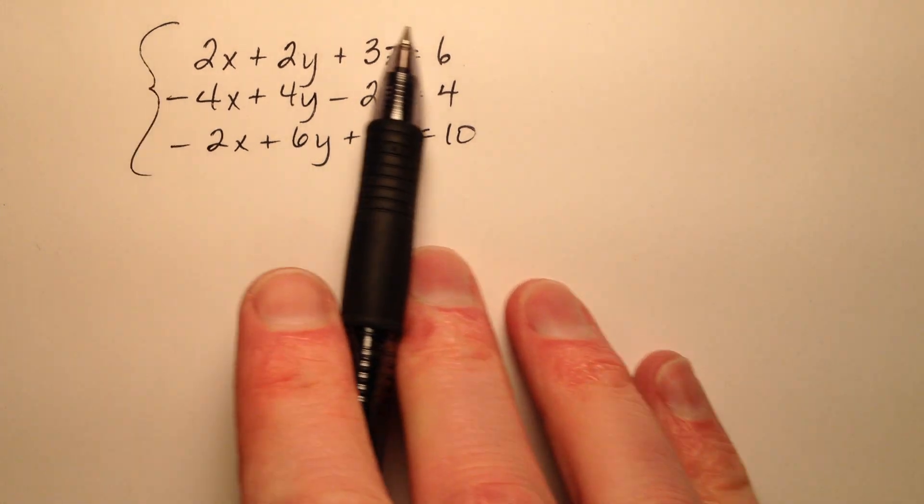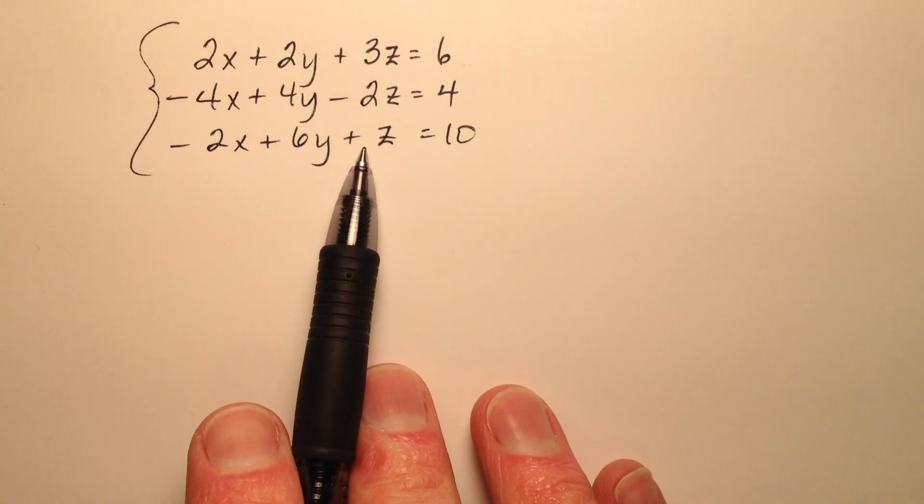In this example, I'm going to solve this system with three equations and three unknown values, and I'm going to do so by starting with substitution.